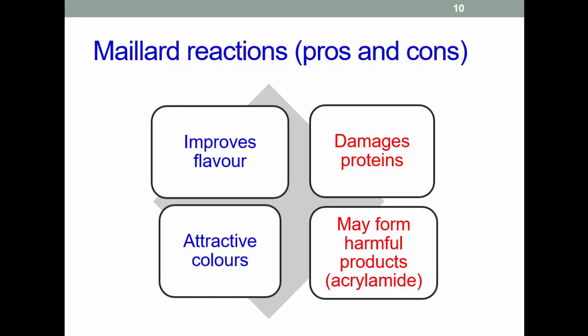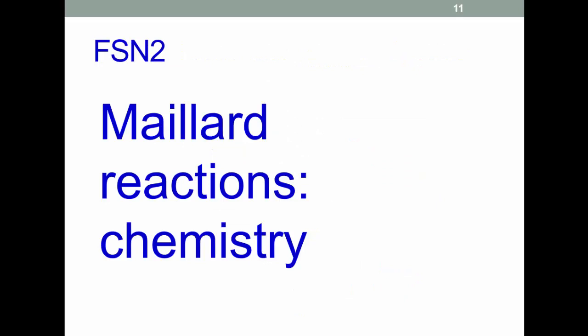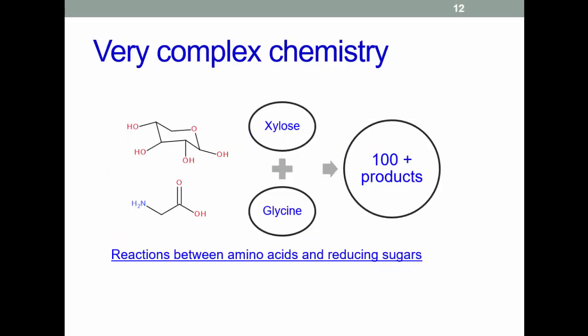It improves flavor and produces attractive colors, but it also damages proteins and may form harmful products — acrylamide being the most well known, at least recently. The chemistry of the reaction is very complex, both in terms of its general chemistry and the huge range of products it can produce. Here we're going to focus on the basics of the reaction, important products, and factors that influence it.